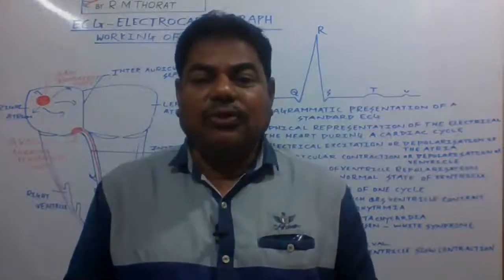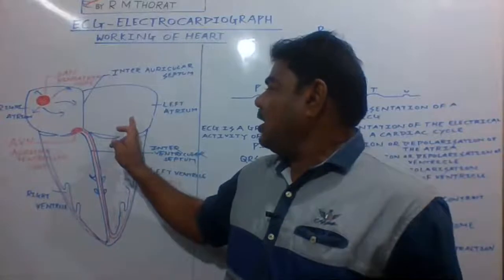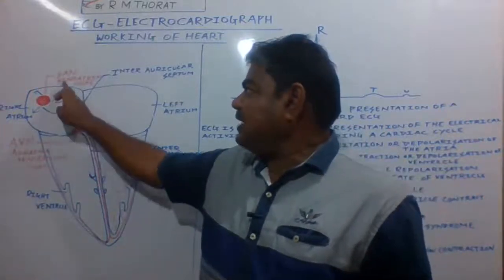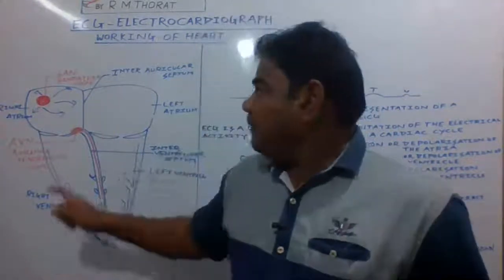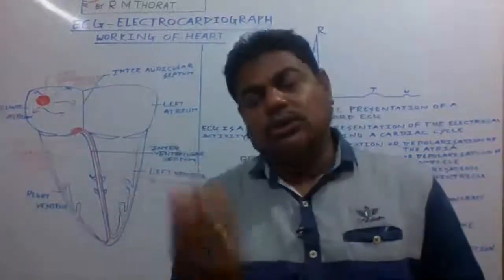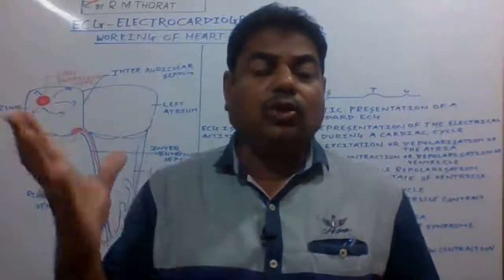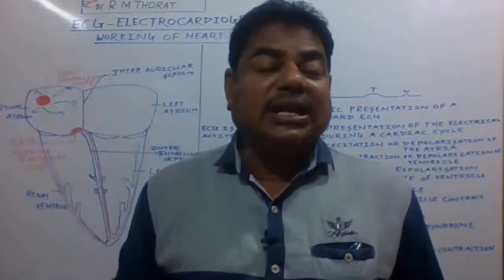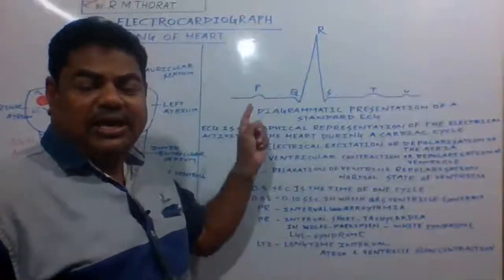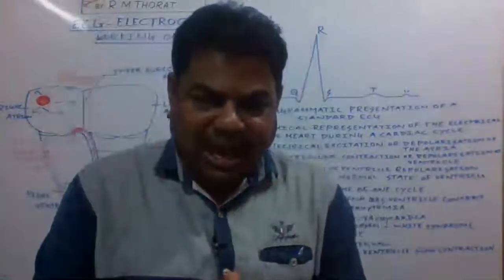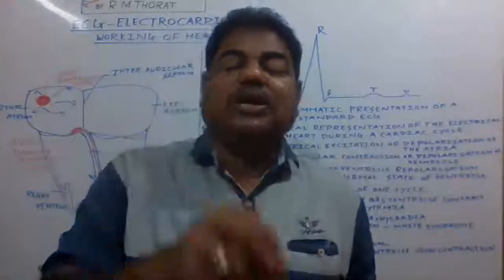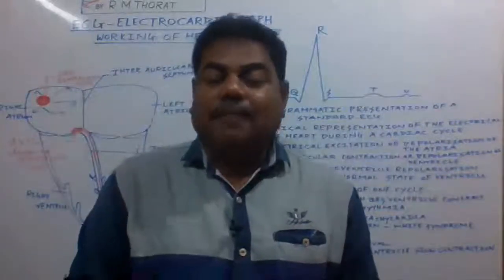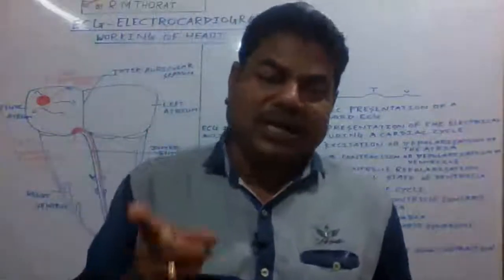The heart has two atria and two ventricles. One sinoatrial node is present which releases electrical impulses. If this sinoatrial node is defective and does not release electrical impulses, then the auricles do not contract properly, and the P wave graph will not appear normal — there will be variations. This means the patient needs an artificial pacemaker.